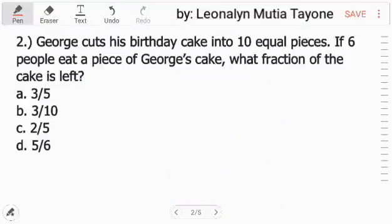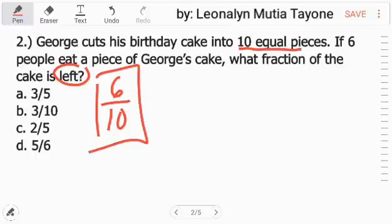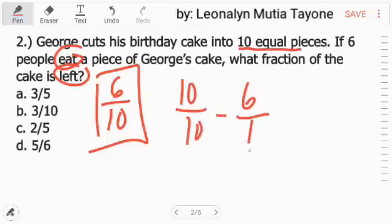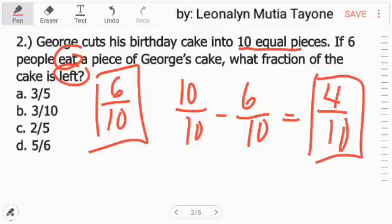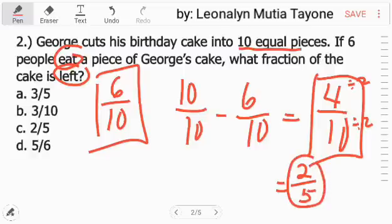Question number 2. George cuts his birthday cake into 10 equal pieces. If 6 people eat a piece of George's cake, what fraction of the cake is left? So, 6 over 10. That's what they ate. The question is, what fraction of the cake is left? So 10 over 10 minus 6 over 10 equals 4 over 10. The 4 over 10, let's simplify that by finding the greatest common factor, which is 2. So 4 divided by 2 equals 2. 10 divided by 2 equals 5. So the answer is 2 over 5, letter C.